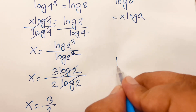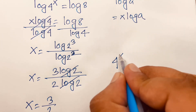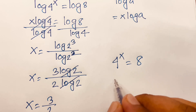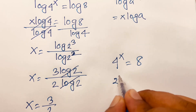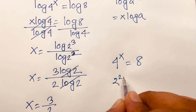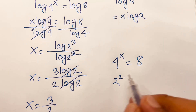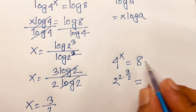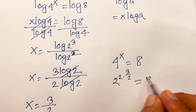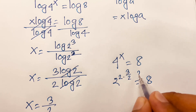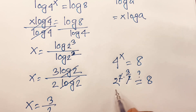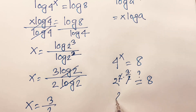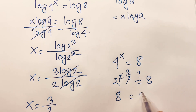Let's verify our answer. The equation is 4 to the power x equals 8. Substituting x equals 3 over 2, we get 4 to the power 3 over 2, which is 2 to the power 2, times 3 over 2. The 2s cancel, giving 2 to the power 3, which equals 8. So 8 is equal to 8, confirmed.